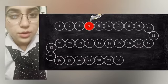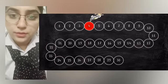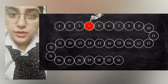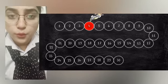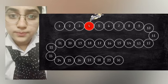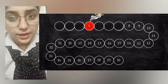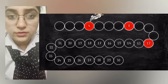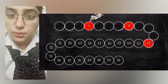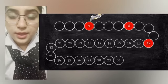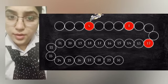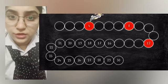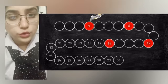Now let's see on which number the rabbit will jump. The rabbit will first jump on four, then it will jump on eight, then again it will take four steps and jump on 12. In the same way the rabbit will jump on 16 and 20.